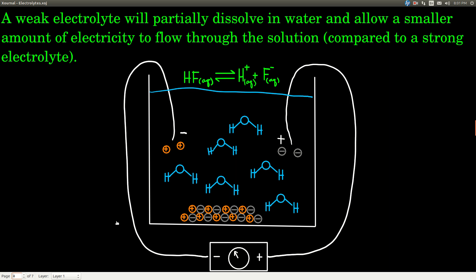A weak electrolyte will dissociate in water, but only partially — as opposed to a strong electrolyte, which completely dissociates. Because it only partially dissociates, a smaller amount of electricity flows through the solution compared to a strong electrolyte. Hydrofluoric acid is an example. Some of it dissociates into hydrogen ions (H⁺) and fluoride ions (F⁻), but many of the molecules stay bonded together. That's a weak electrolyte. We would not see as much current if the concentration of hydrofluoric acid equaled that of sodium chloride, which is a strong electrolyte.